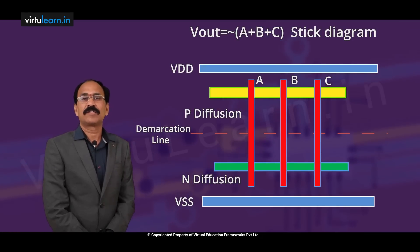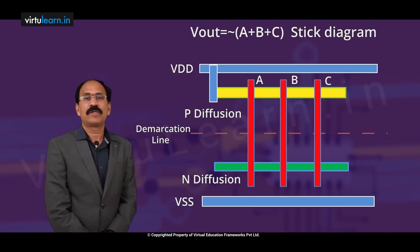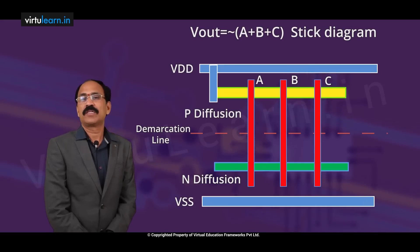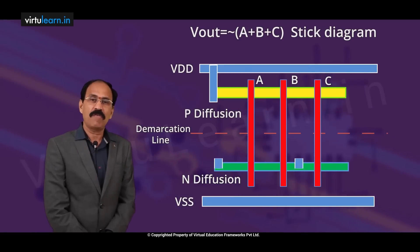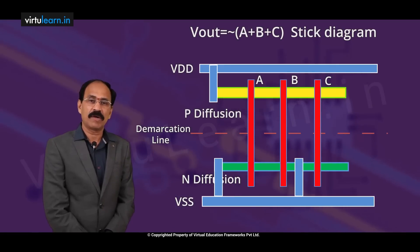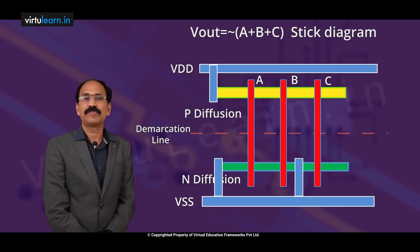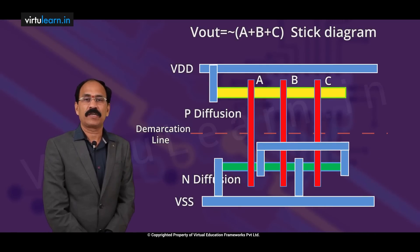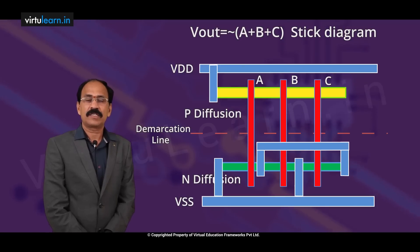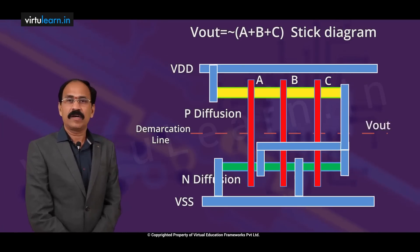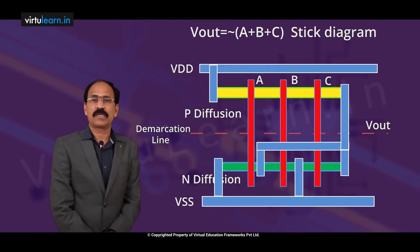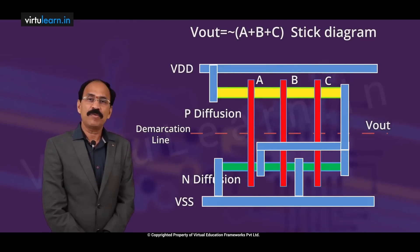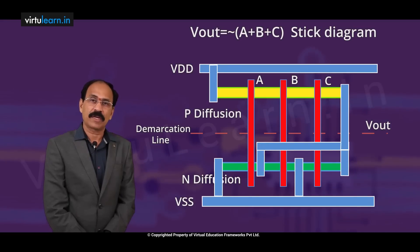Now drains — the drain of P-MOS has to be connected to VDD. Sources of all the N-MOS transistors have to be connected to ground. Then inputs, outputs, and the connections we have to make. All the sources of all the transistors have to be connected, and sources of all are grounded.